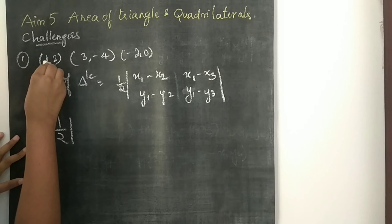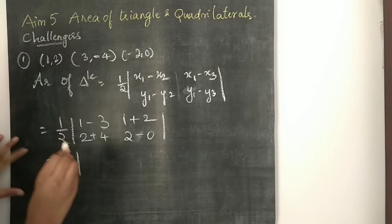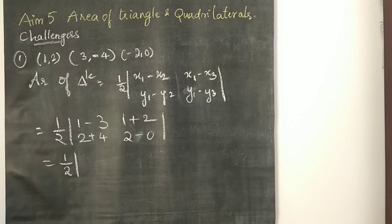Solving: half into x1 is 1, so 1 minus x2 which is 3. Then y1 is 2, y2 is minus 4, so minus into minus is plus 4. Now x1 is 1 minus x3 which is minus 2 — minus into minus is plus 2. Then y1 is 2, y3 is 0, so 2 minus 0.